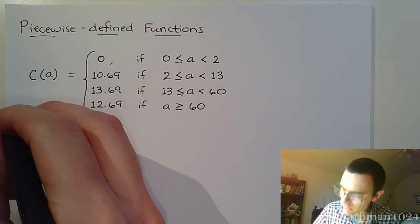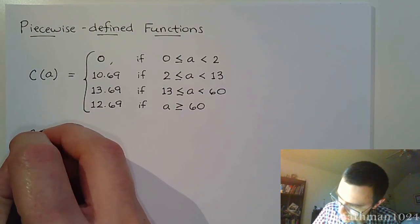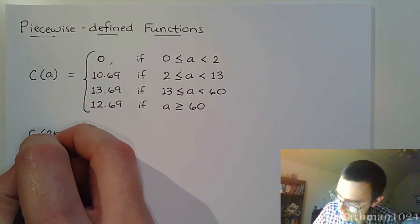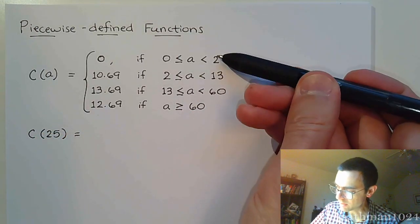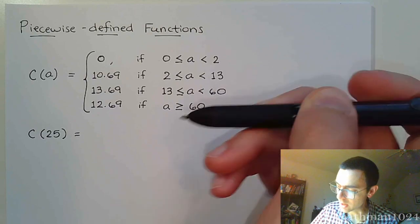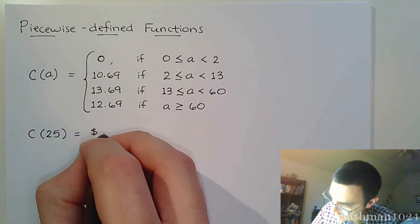So if I say, what is the cost of somebody who is 25 years old? Well, their cost for going to see a movie—they fall into this particular bracket right here—and so their cost would be $13.69.